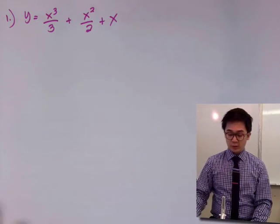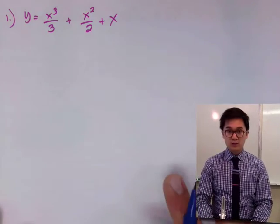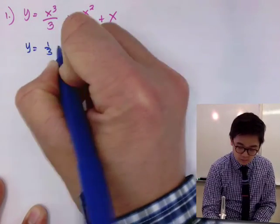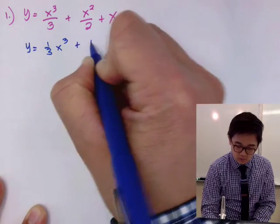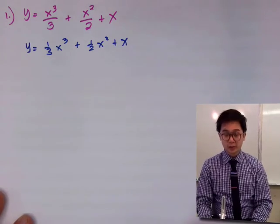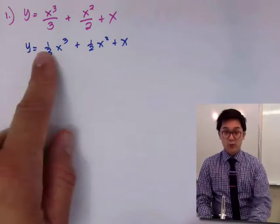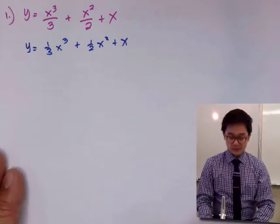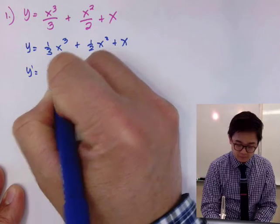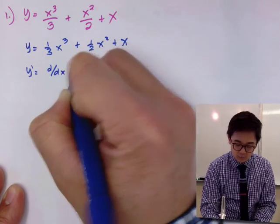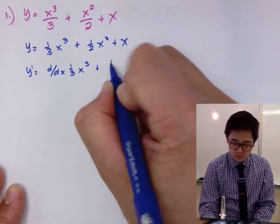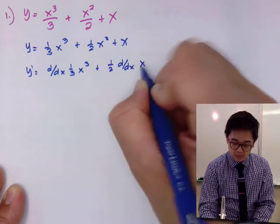The first step is to change the function so the power rule will be a lot easier to use, because we're just going to multiply by 1 third with the derivative of x cubed. So y prime is equal to the derivative of 1 third x cubed plus 1 half times d/dx of x squared.